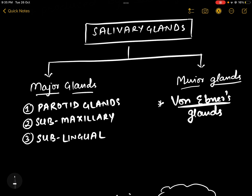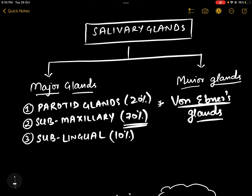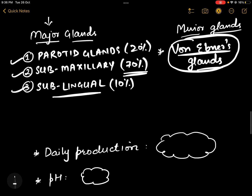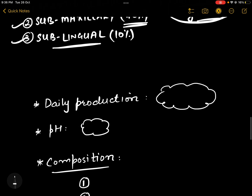The glands responsible for maximum secretion are the submaxillary glands, responsible for almost 70% of the total saliva. Parotid glands contribute about 20% and sublingual glands contribute about 10% of the total secretion. These are all paired glands, and we also have minor glands like von Ebner's glands.